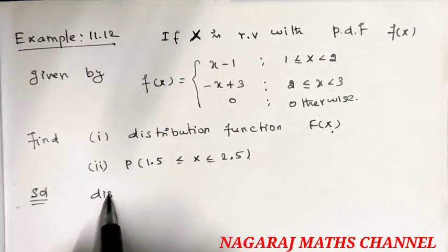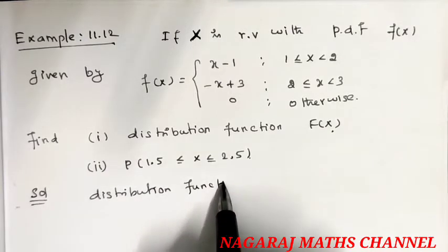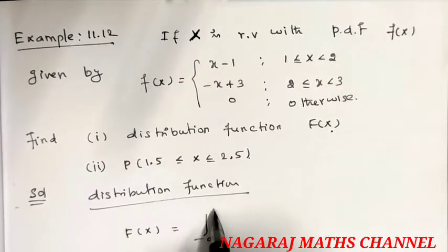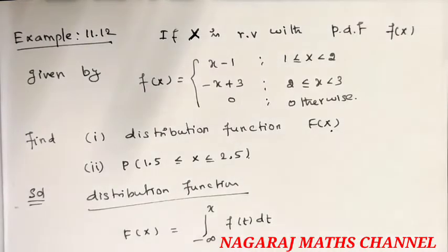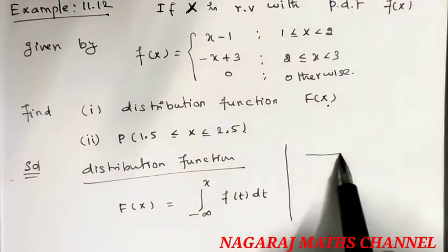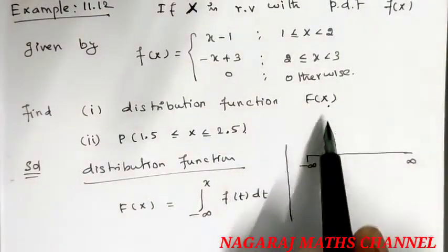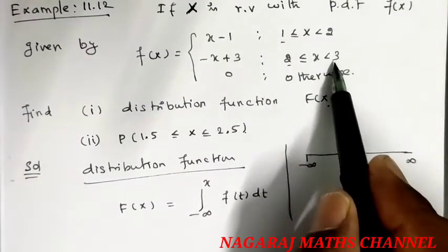Here is the solution. First, the distribution function. We have the formula: F(x) = integral from minus infinity to x of f(t) dt. In general, the variable runs from minus infinity to plus infinity. Looking at the limits here, we have 1, 2, and then 3.